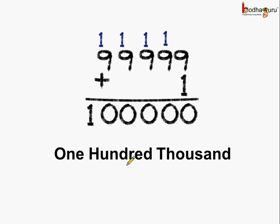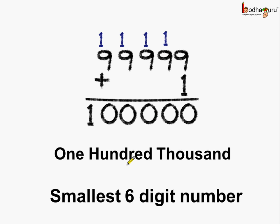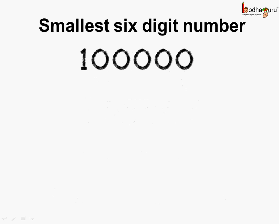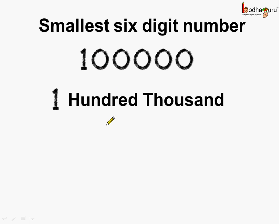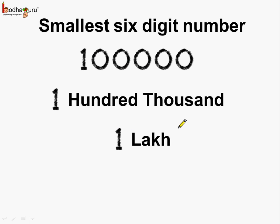And what is it called in the Indian system? It is the smallest 6-digit number. There are 100,000s. So 100,000 — you know this 100,000 is the smallest 6-digit number, which is equal to 100,000. And it is known as 1 lakh.